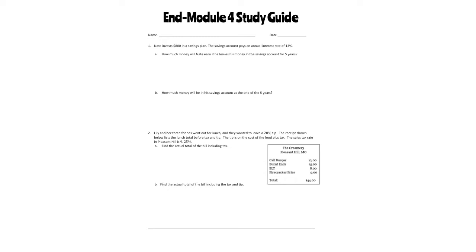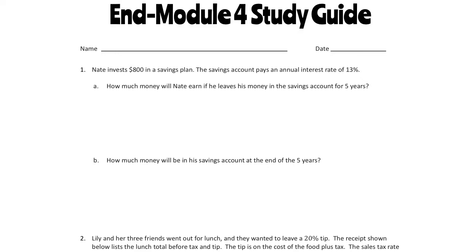Number 1: Nate invests $800 in a savings plan. The savings account pays an annual interest rate of 13%. How much money will Nate earn if he leaves his money in the savings account for 5 years? Before we begin, we have to know what formula we're going to use, and that's going to be the interest formula: Interest equals the principal times the rate times the time, and the time is usually in years.